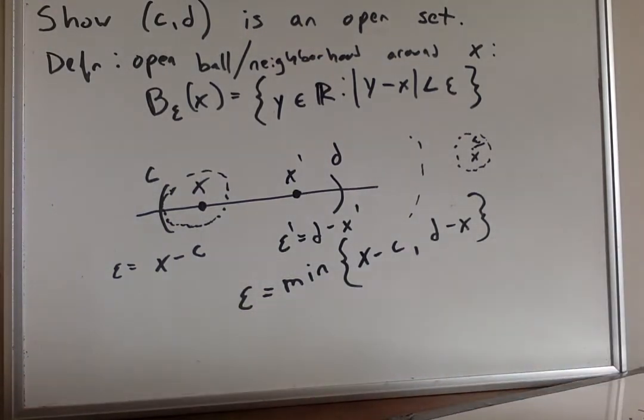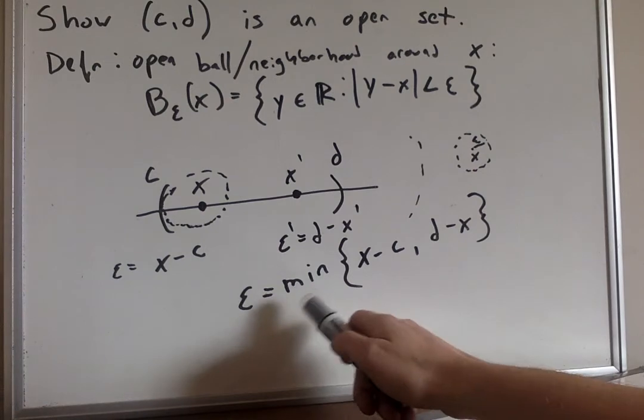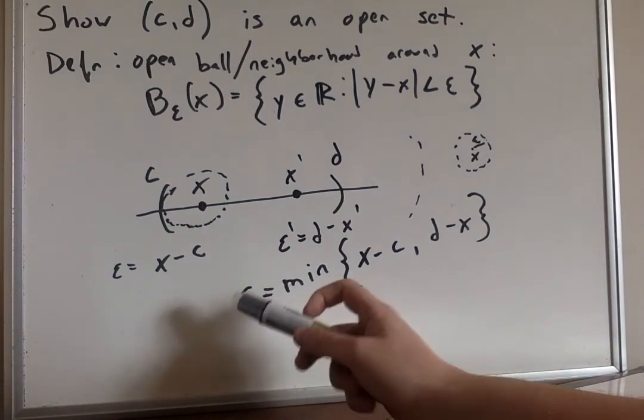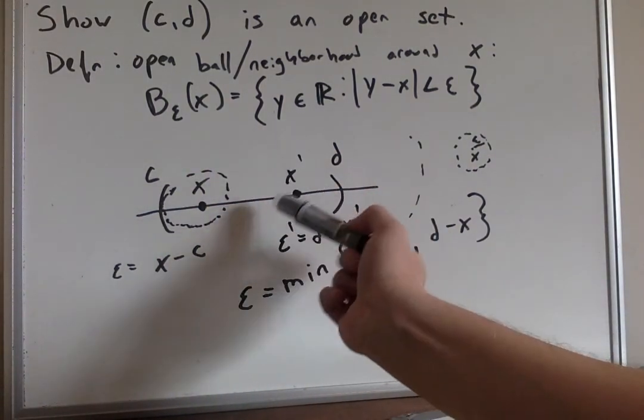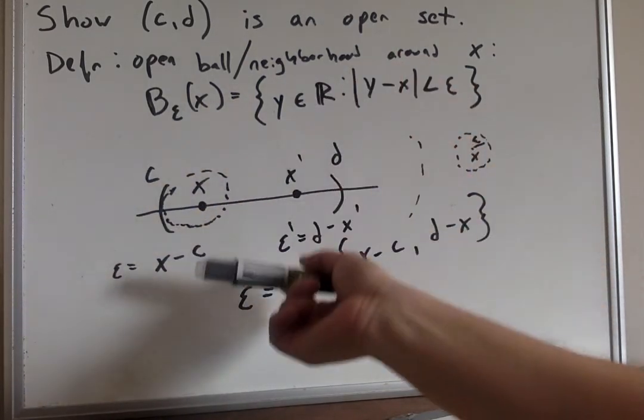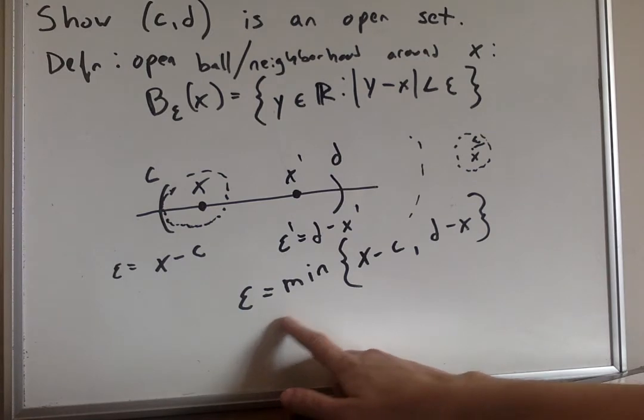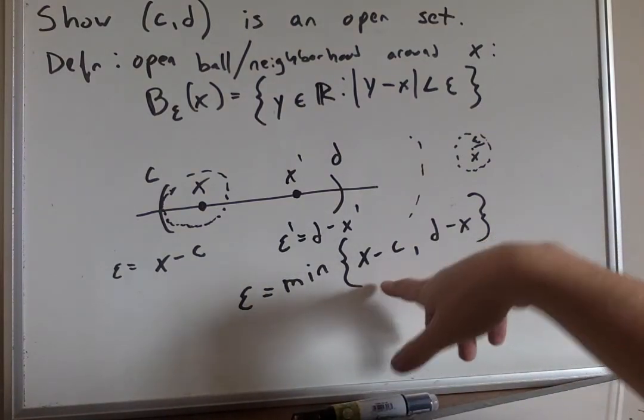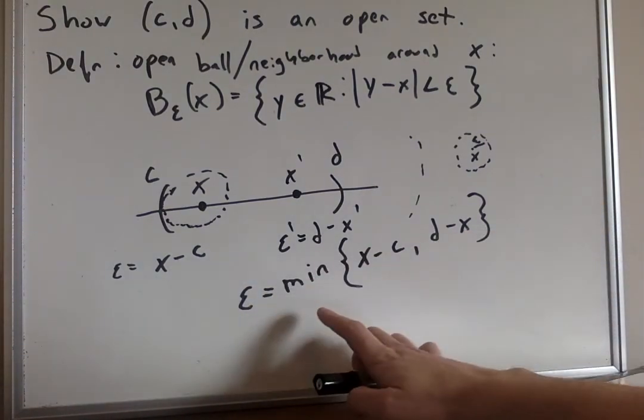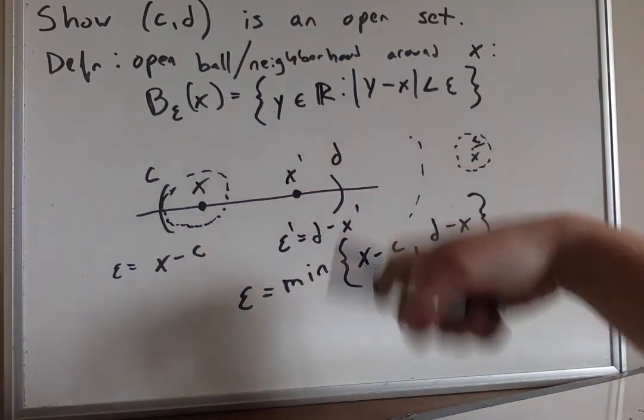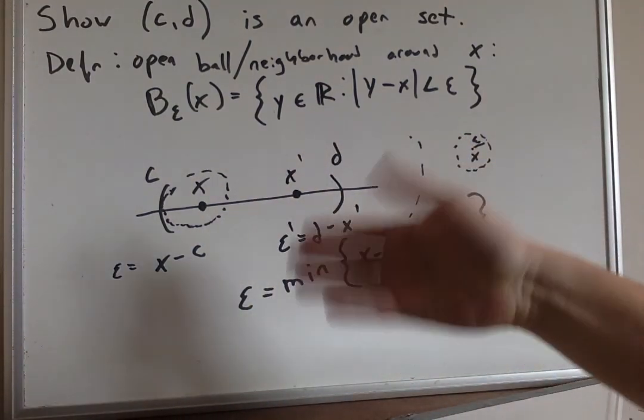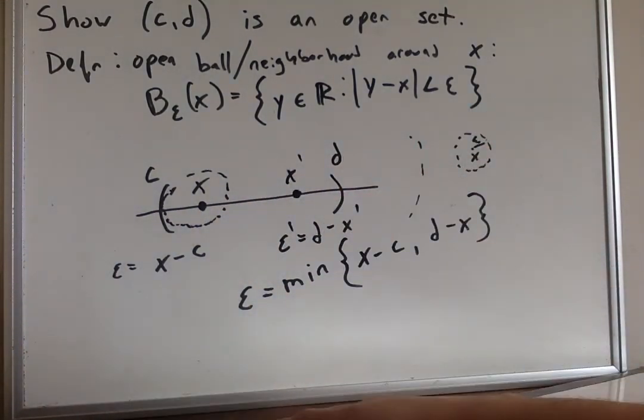So basically, what we've shown here, the reason this has given us our solution, is we've shown that for any arbitrary x within our set, or within our interval, no matter what x you pick, if we choose epsilon to equal the minimum of the distance from x to an endpoint, you're always going to be able to draw a ball that's going to be, or an epsilon interval in this case, that's going to be completely contained within the set.